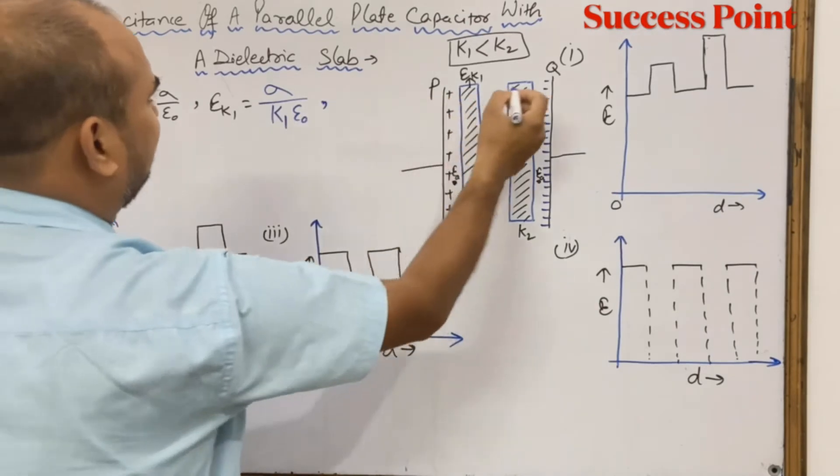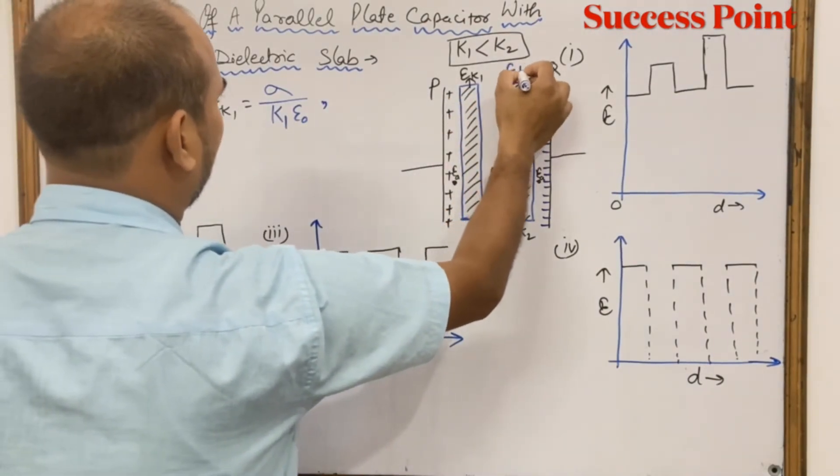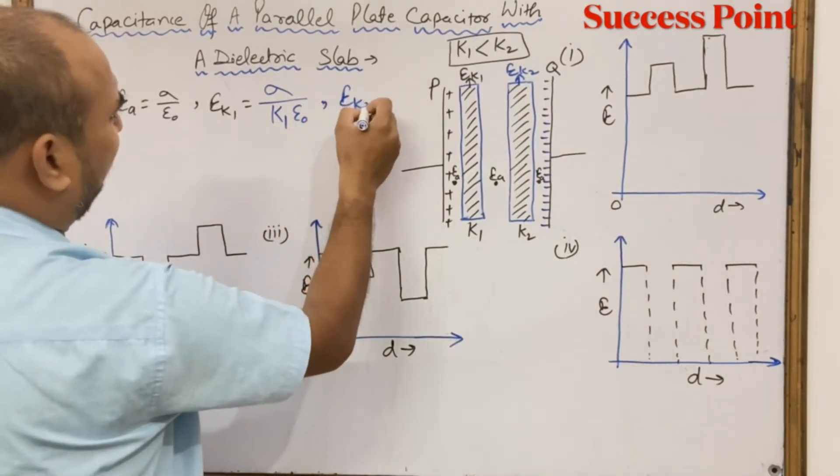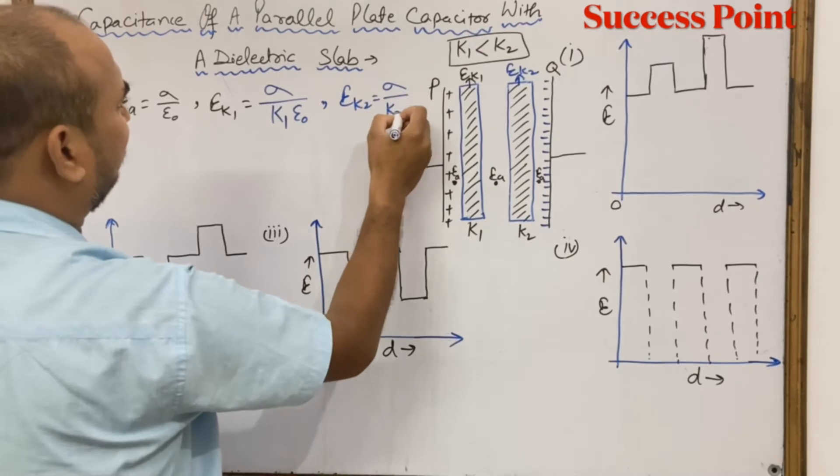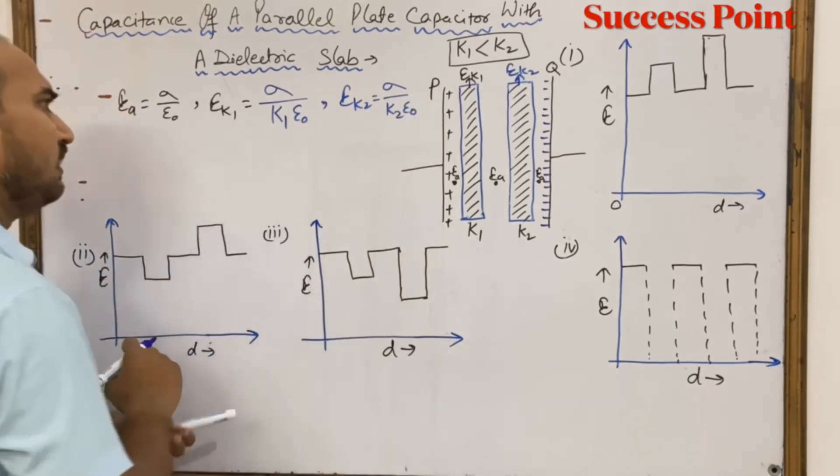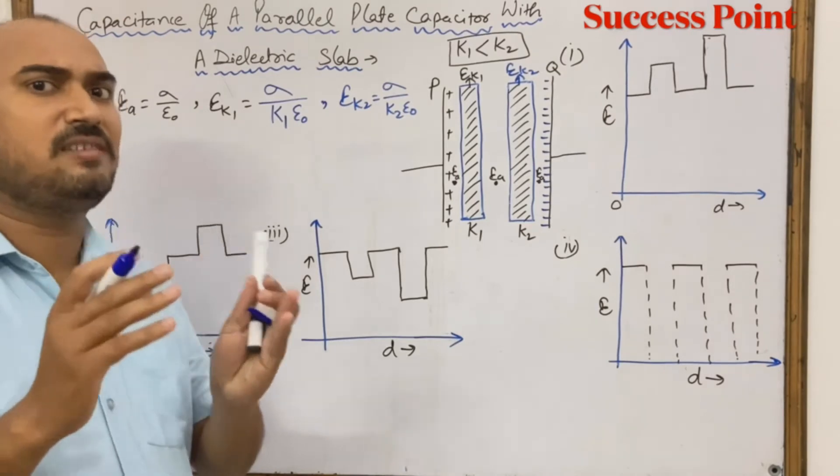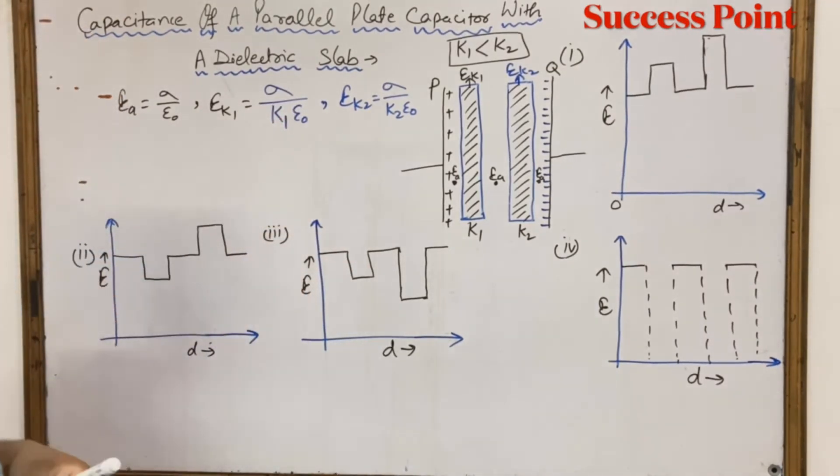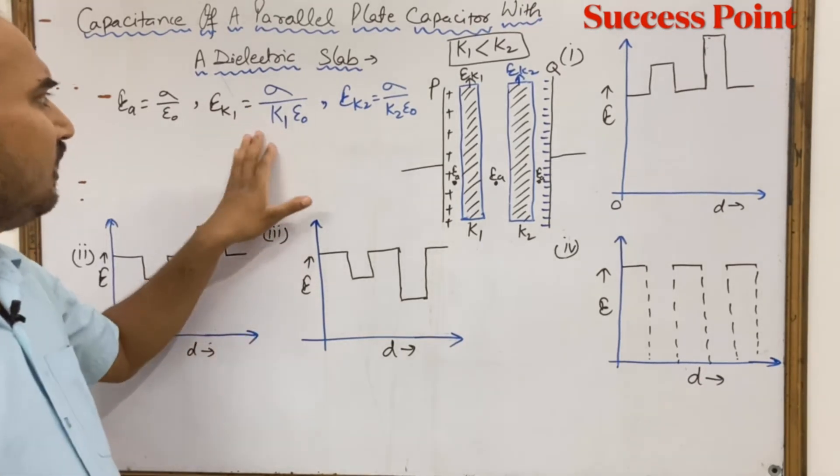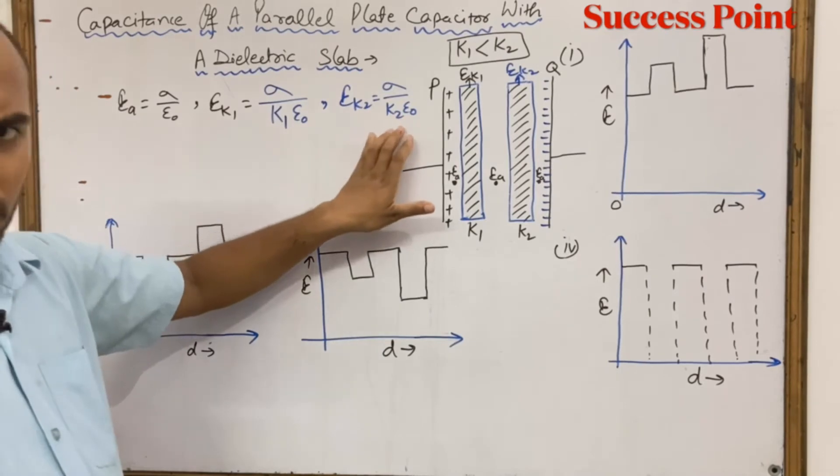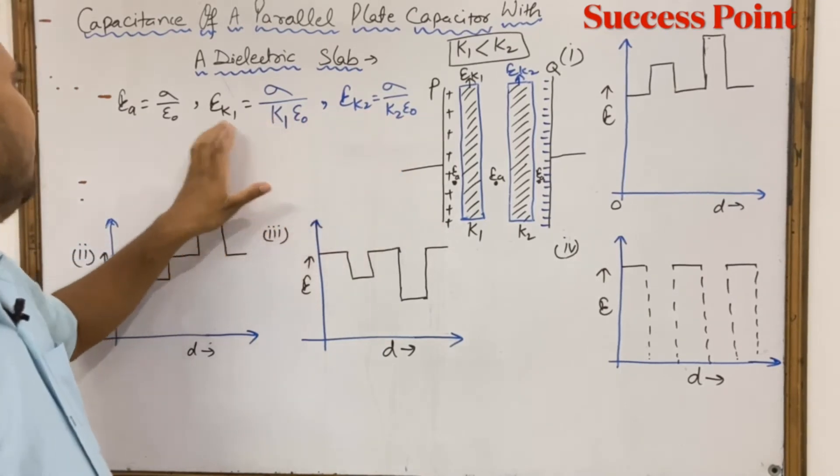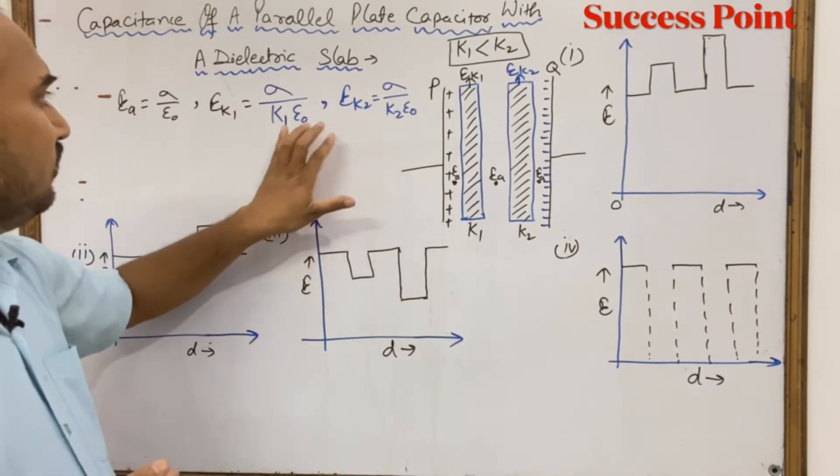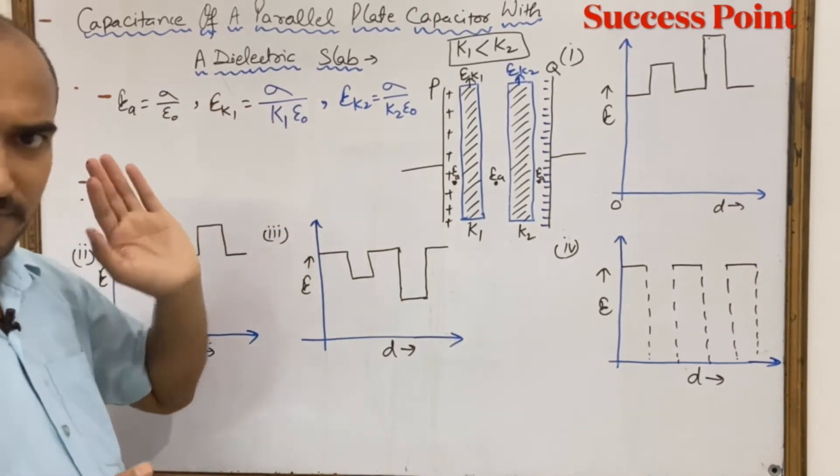In the second dielectric, the electric field is EK2, which equals sigma upon K2 epsilon zero. Since K is always greater than 1, both EK1 and EK2 are smaller than Ea. This is the first thing.